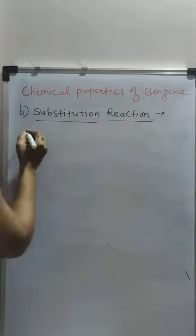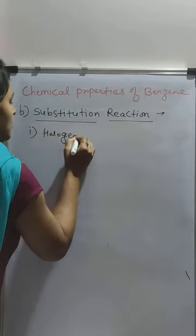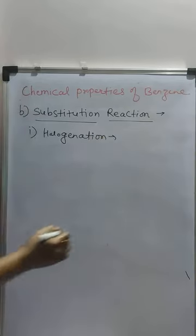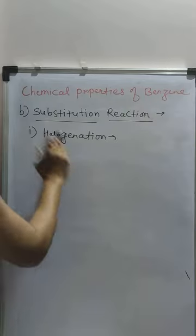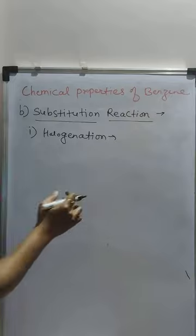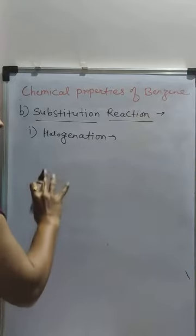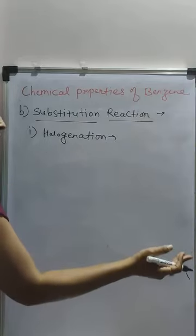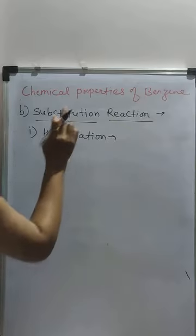The first substitution reaction is halogenation. In halogenation, the hydrogen atom of benzene is replaced by a halogen atom — there is a replacement of one or more hydrogen atoms by one or more halogen atoms. This is called a substitution reaction.